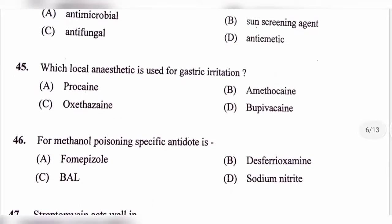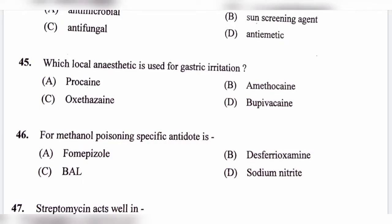Question number 45. Which local anesthetic is used for gastric irritation? Option A, Procaine; option B, Amethocaine; option C, Oxethazine; option D, Bupivacaine. The correct answer is option C, Oxethazine. Oxethazine, also known as oxetacaine, is a potent local anesthetic. It is administered orally, usually with antacid, for the relief of pain associated with peptic ulcer disease or esophagitis.